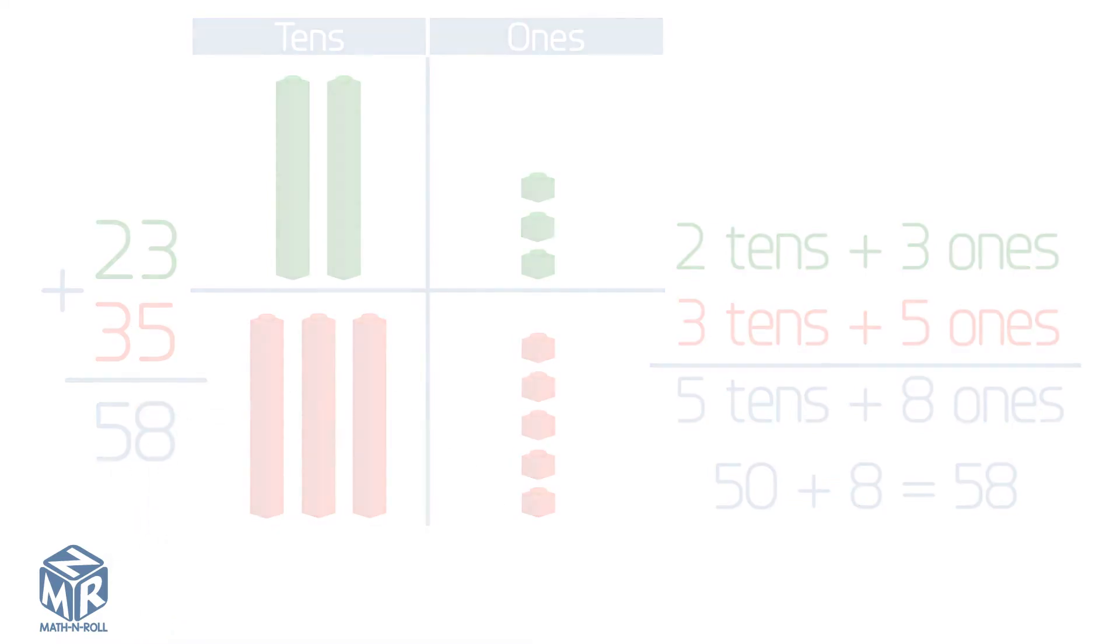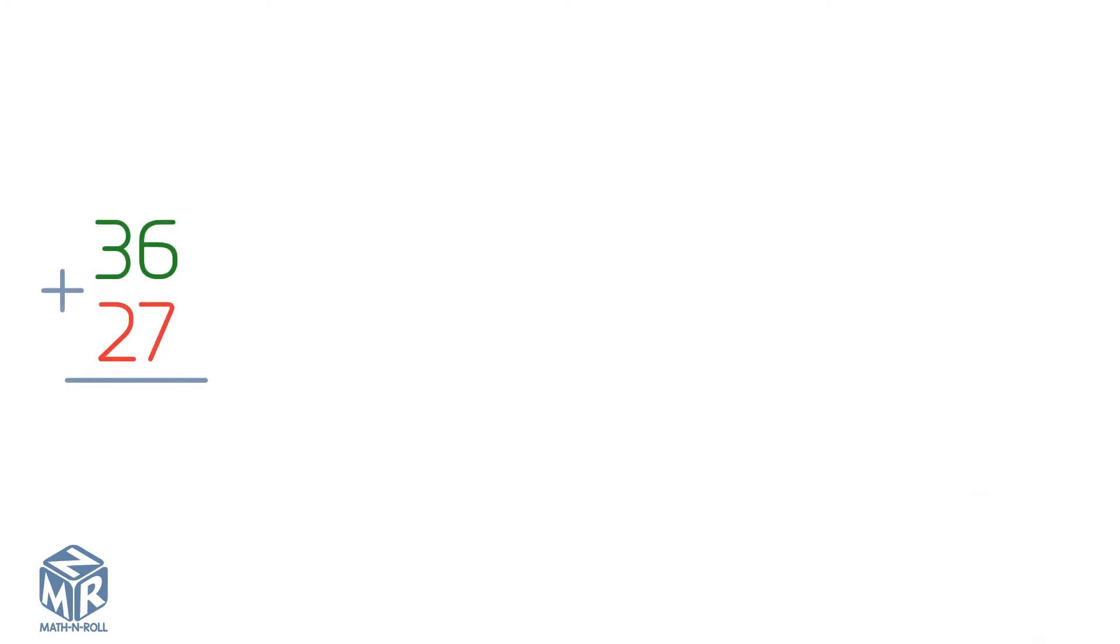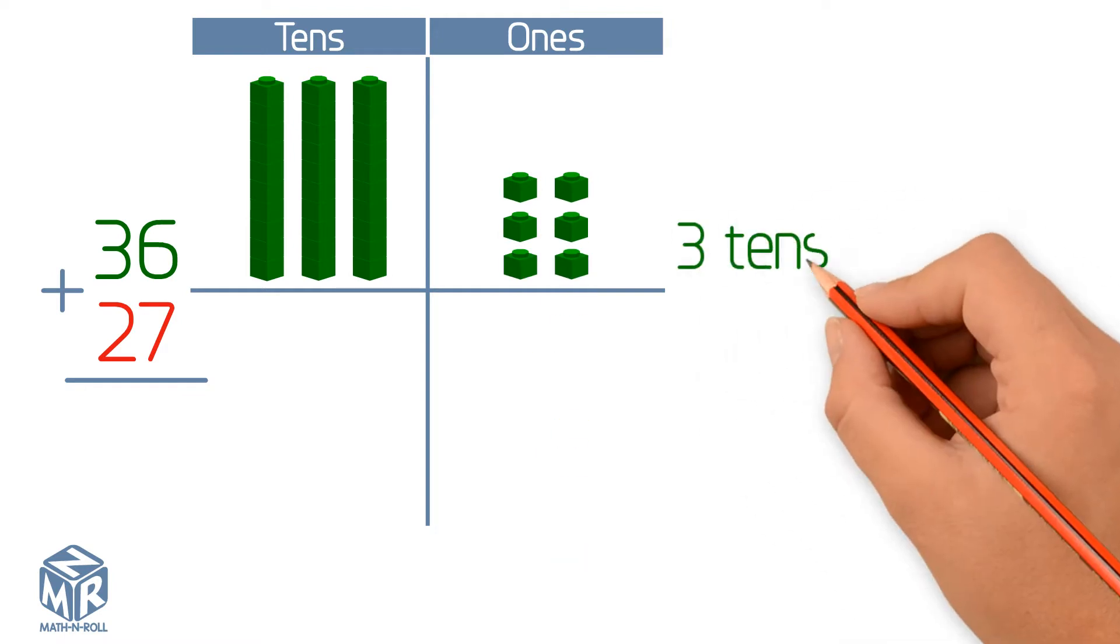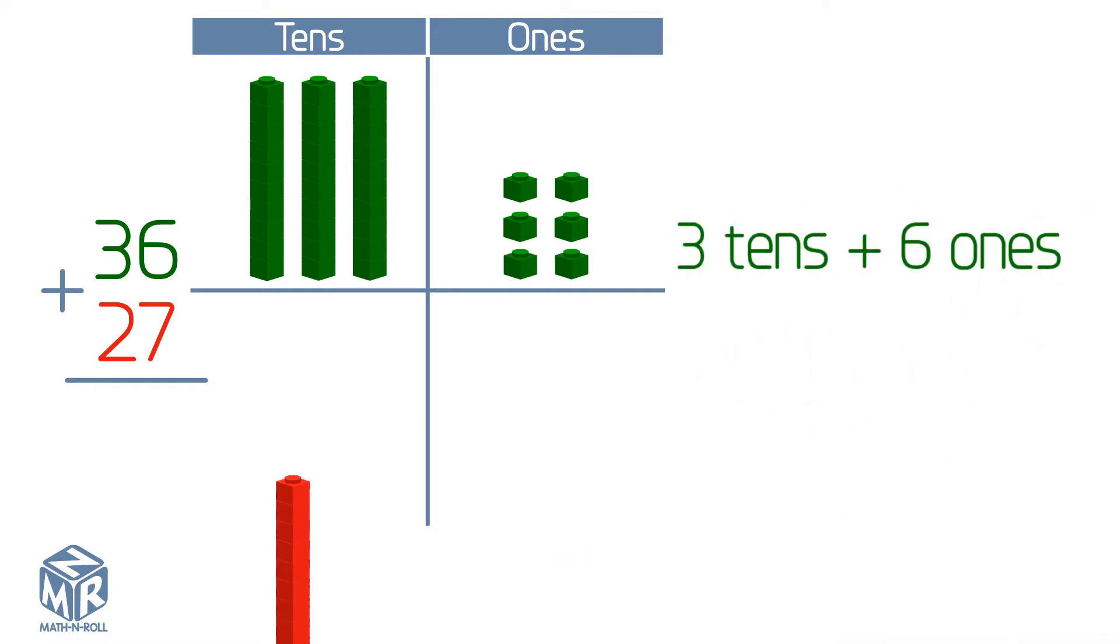Let's try another example. 36 plus 27. 36 has three tens and six ones. 27 has two tens and seven ones.